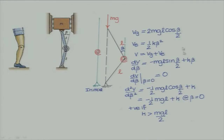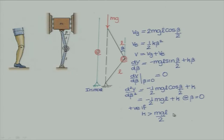Writing the potential energy from gravity: if this angle is beta, then it is beta by 2 at each link, giving 2mgl·cos(β/2) as the gravitational potential energy. The spring potential energy is half k·beta squared. Total potential energy is V = 2mgl·cos(β/2) + ½kβ². Taking d²V/dβ² and evaluating at beta equal to 0 gives minus half·mgl plus k greater than 0, which means k must be greater than mgl/2.